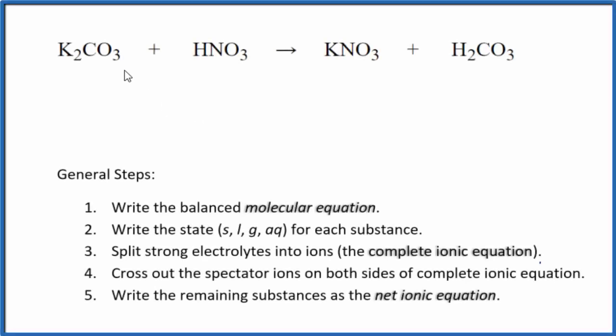In this video we'll balance the net ionic equation for K2CO3 plus HNO3, potassium carbonate and nitric acid. This is a double displacement reaction and we end up with these products: potassium nitrate and carbonic acid.